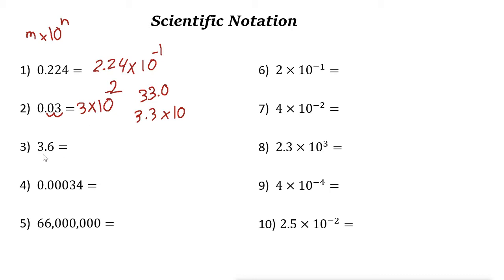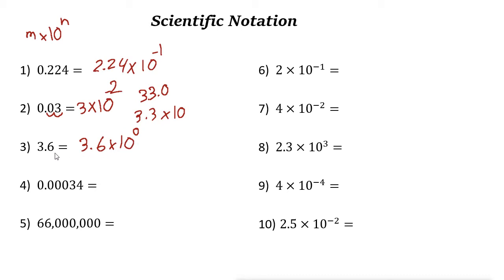For 3.6, you don't need to move the decimal point at all, because m is 3.6, which is already greater than 1 and less than 10. So you write 3.6 times 10 to the power of 0, because we didn't move the decimal point — the change was 0. And 10 to the power of 0 is just 1, so 3.6 times 1 is just 3.6.